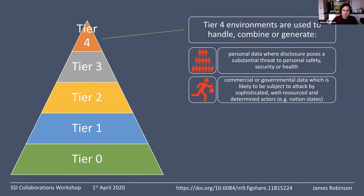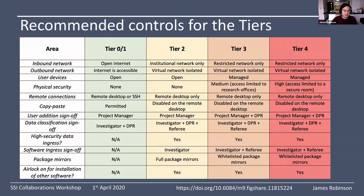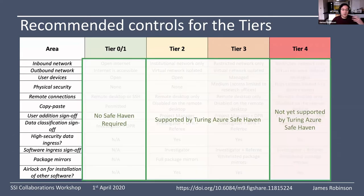Tier four covers personal data where disclosing it would be a severe, substantial threat to personal safety or security, and where sophisticated actors like nation states might be interested in trying to compromise it. In terms of controls: for tiers zero and one, you don't need to use something like this safe haven. For tiers two and three, we've run projects using our safe haven implementation. Tier four is something where we don't have the confidence that we're able to implement the types of controls we'd want to support.